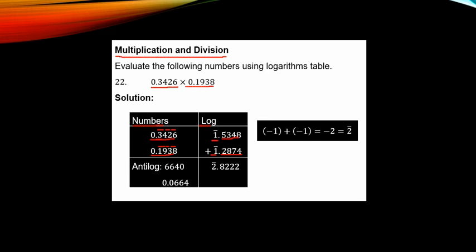Multiplication implies addition of log values. When you add the two log values, there is no carrying over from the decimal part. So you have minus 1 plus minus 1, which equals minus 2, written as bar 2.